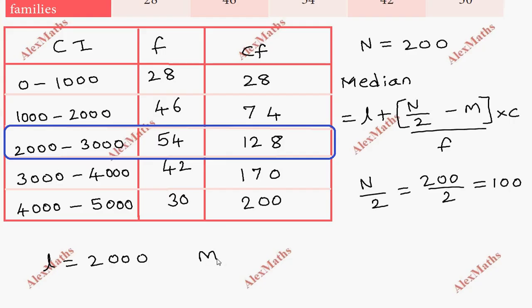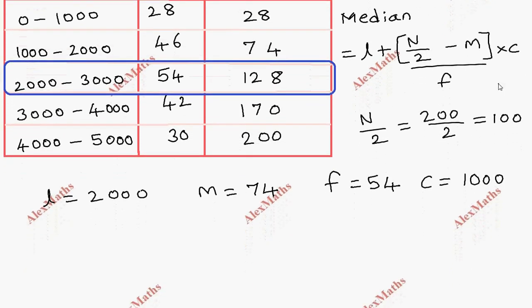The median class is 2000 to 3000. In the median class, M is 74, frequency F is 54, and C, the width of the class interval, is 1000. This is the median formula.